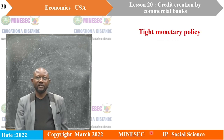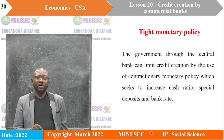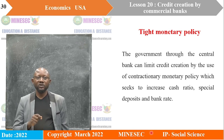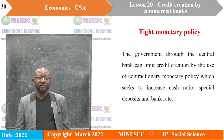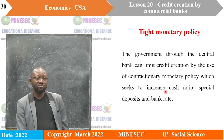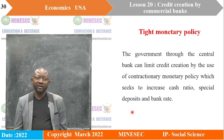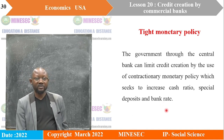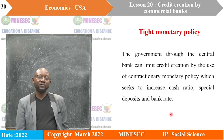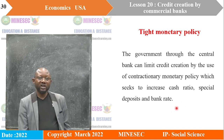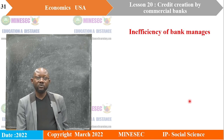Tight monetary policy — that is, contractionary monetary policy — is another limitation. The government through the central bank can limit credit creation by using contractionary monetary policy, which seeks to increase the cash ratio, special deposits, and bank rates. When the cash ratio is increased, less cash is available and excess reserves are reduced. Increased special deposits and higher bank rates further reduce banks' liquidity, meaning they cannot grant as many loans as they would have wanted. A contractionary monetary policy therefore limits the ability of banks to create credit.